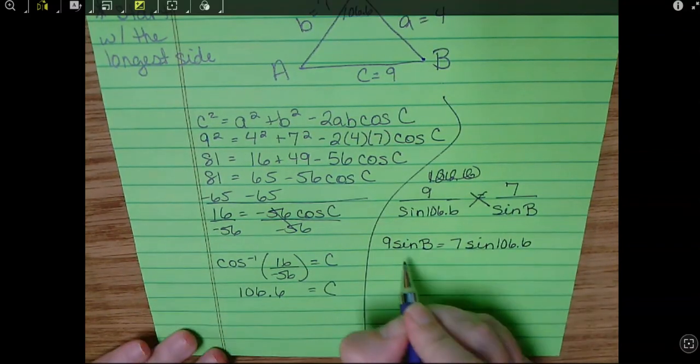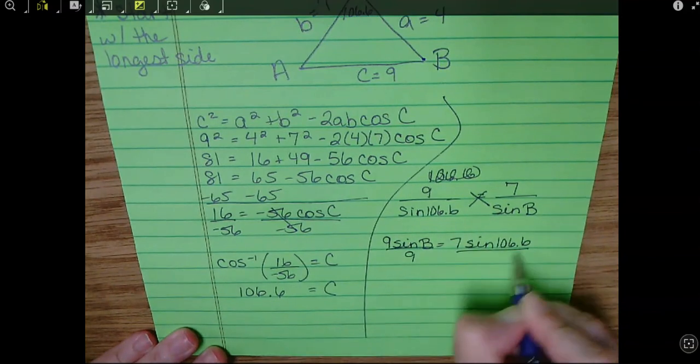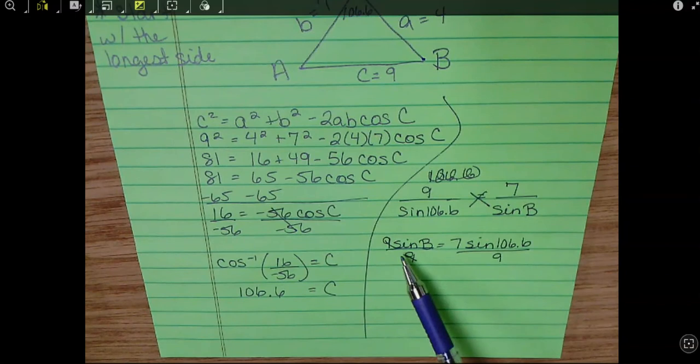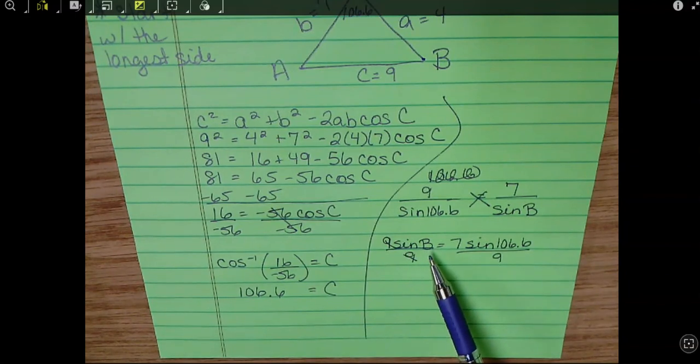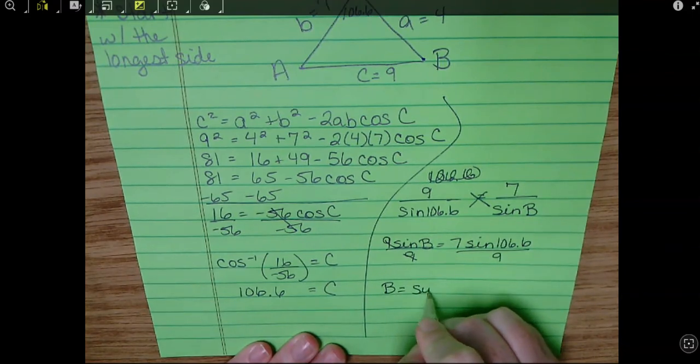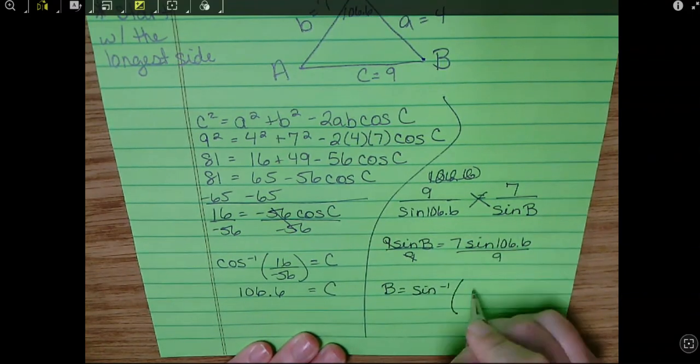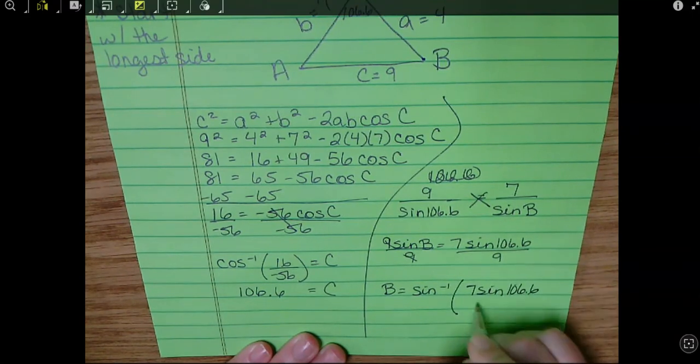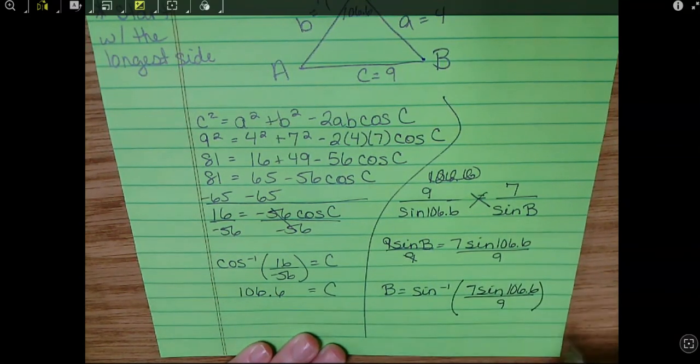Okay. Divide by 9, sine of B. And how do you separate sine with B? Good job. It is the inverse. So inverse sine of 7 sine of 106.6 over 9.